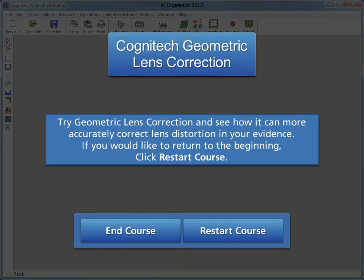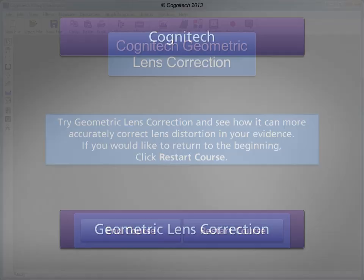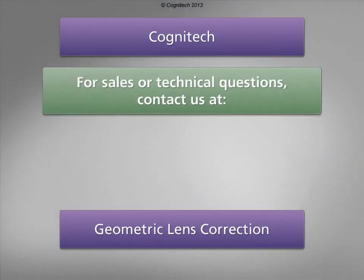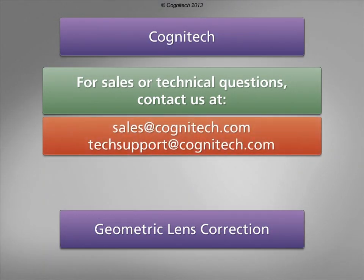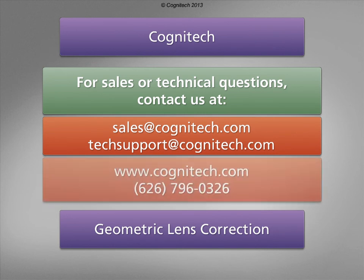Try geometric lens correction and see how it can more accurately correct lens distortion in your evidence. If you would like to return to the beginning, click Restart Course. For sales or technical questions, contact us at sales@cognitech.com or techsupport@cognitech.com, or visit us at www.cognitech.com.